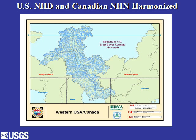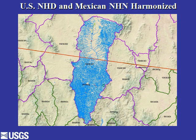Canada and Mexico are also building datasets similar to the National Hydrography Dataset and the Watershed Boundary Dataset. We are combining Canadian data with U.S. data into one hydrologic unit, and doing the same with Mexico, so that data across the border becomes seamless, allowing scientists to study border regions without regard for political boundaries.